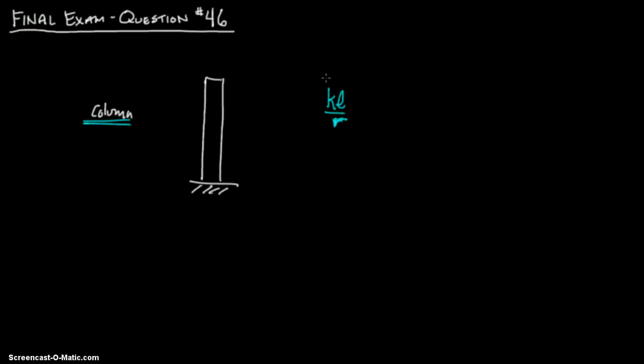So, this is your length. If you multiply it by K, that makes it your effective length. And remember K is, you can go into your steel book and it has different Ks for, this would be a fixed free connection. And then you have pin-pinned.